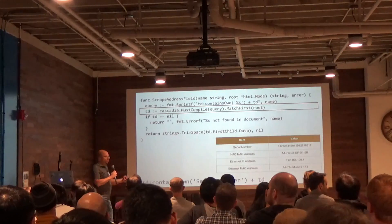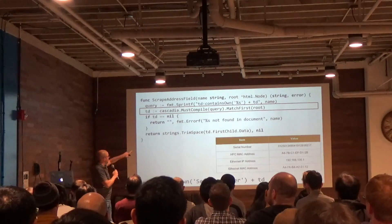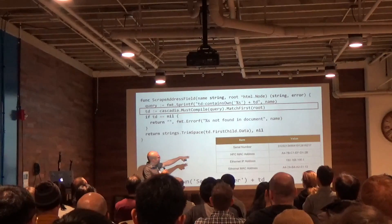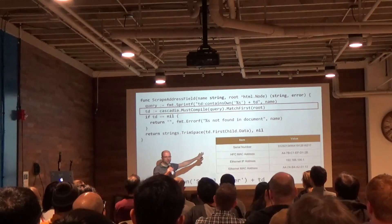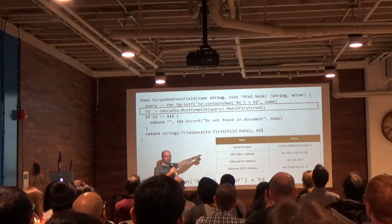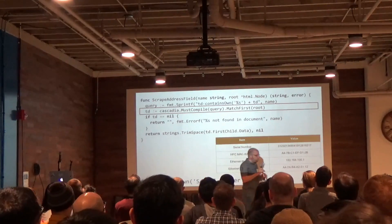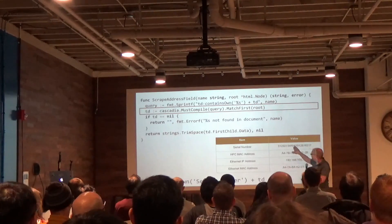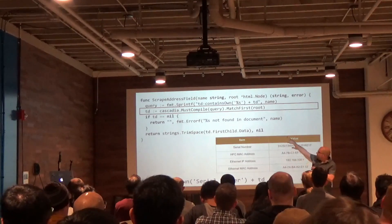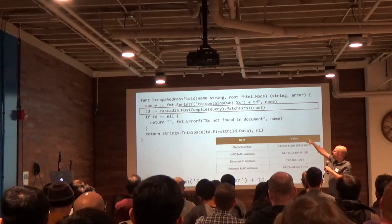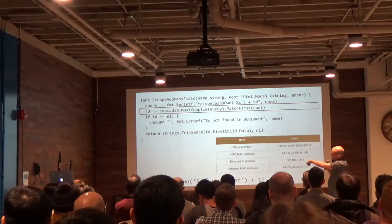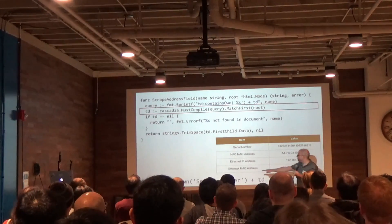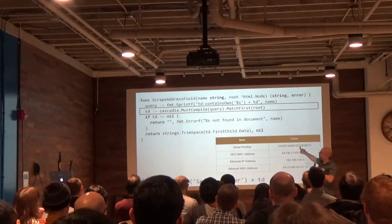So again, just one line of code to parse, one line of code here to match based on a particular selector rule. In my example with the cable modem UI — it has a MAC address, serial number, et cetera. I want to write a simple method, 'scrape address field', where I give it 'serial number' and it gives me back that value, or I give it 'MAC address' and it gives me back that value. The first line of code formats a query. That query translates to: 'td contains serial number plus td' — give me a td that contains serial number, but actually give me the next td.